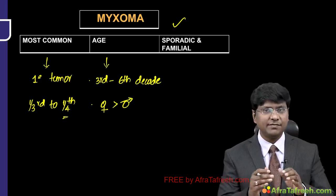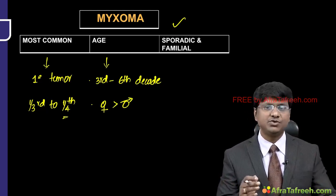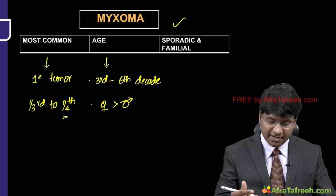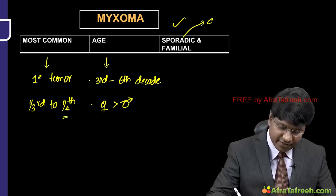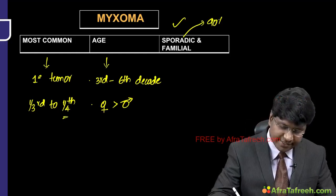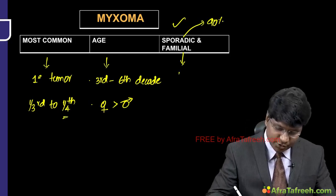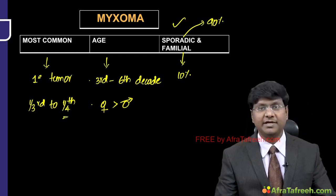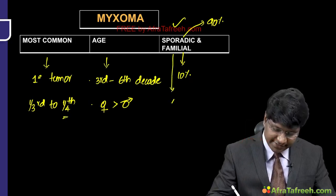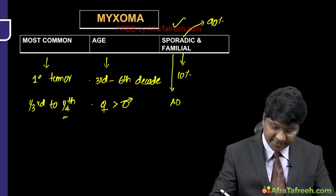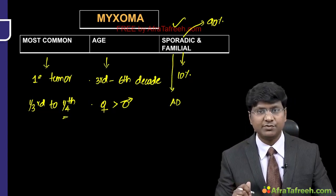Some myxomas are sporadic and some are familial. Ninety percent of myxomas are sporadic; only 10 percent are familial. The type of inheritance in familial cases is autosomal dominant transmission.